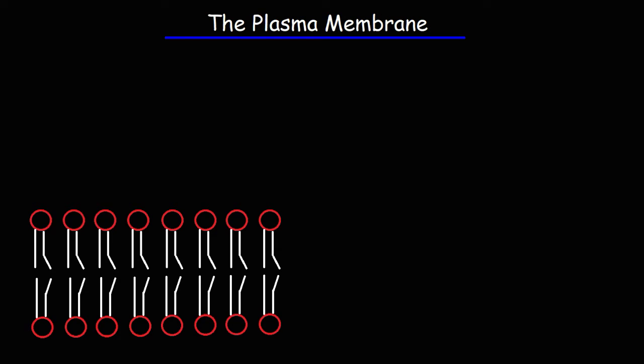In this video we're going to talk about the plasma membrane. The plasma membrane of cells is made up of something called phospholipids and here is a typical structure of a phospholipid.